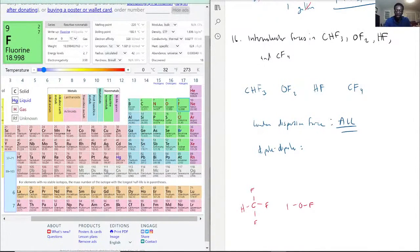OF2 looks like this, HF looks like this, and CF4 looks like this. CF4 and CHF3 look quite similar to each other. That's a big hint on whatever bonds are present.